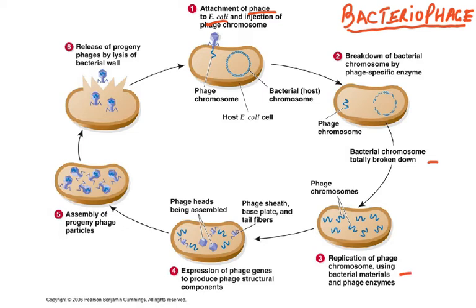The phage chromosome replicates using bacterial materials and phage enzymes. Then the phage head, base plate, tail fibres and other structural components are expressed. The protein coat is made using the bacterium's amino acids and ribosomes — viruses have no ribosomes of their own, but the viral DNA takes over and uses the bacterial ribosomes. New progeny phage particles are assembled, then released by lysis of the bacterial wall. What started as one phage produces many, which go on to attack other cells.